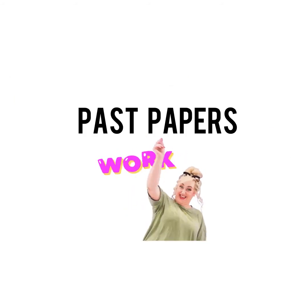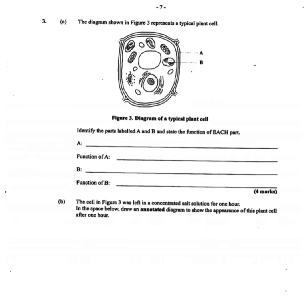Now let's work some past papers with photosynthesis questions. This is the 2012 CSEC biology paper, showing a diagram of a typical plant cell asking us to identify A and B and state their functions. A is the cell wall and B is the chloroplast. The cell wall functions in protecting the cell membrane, providing structural support and protection against pressure and osmotic stress. The chloroplast is the site for photosynthesis — it has chlorophyll which traps light energy to fix CO2 and water into glucose.